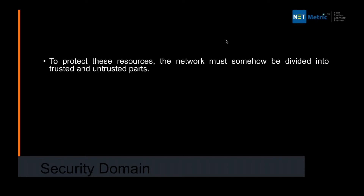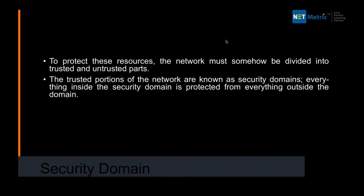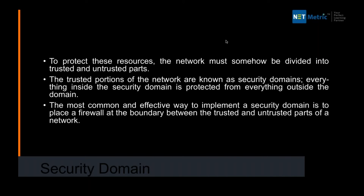To protect these critical resources, the network must be divided into two major domains: one is called the trusted domain, where we trust the most, and one is the untrusted zone, which in our topic will be the internet — an unsecured zone. The trusted portion of the network is also known as a security domain. The most common and effective way to implement a security domain is to place a firewall at the boundary between the trusted and the untrusted part of the network.